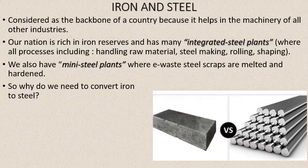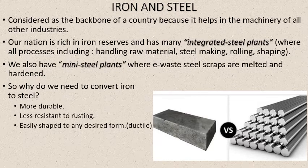Why are we converting iron to steel? There are many uses for steel that don't apply to iron. Number one: steel is more durable — it can stay for a long period of time and doesn't break easily. The life of an iron bar is much less than the life of a steel bar. Steel is much stronger and more durable. Number two: steel is less resistant to rusting — the most important reason steel was developed was because iron is susceptible to rust.